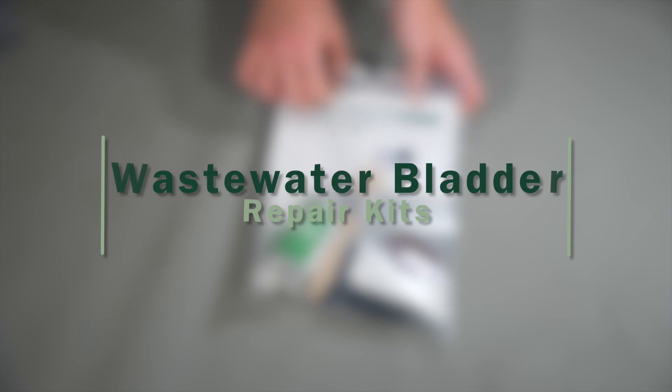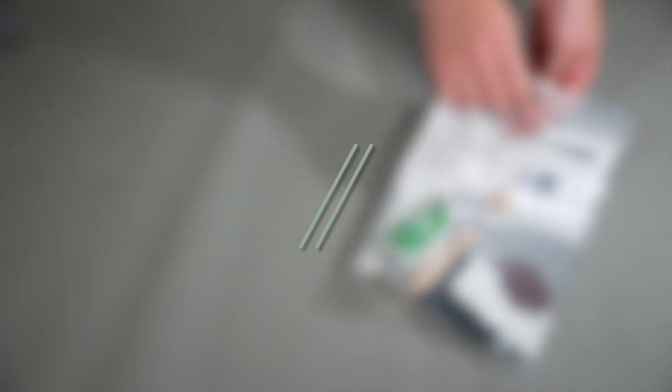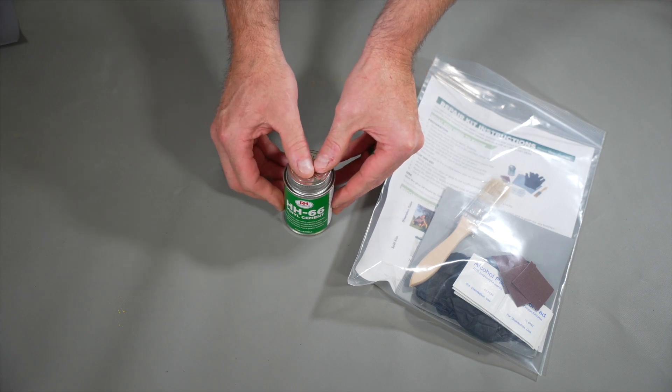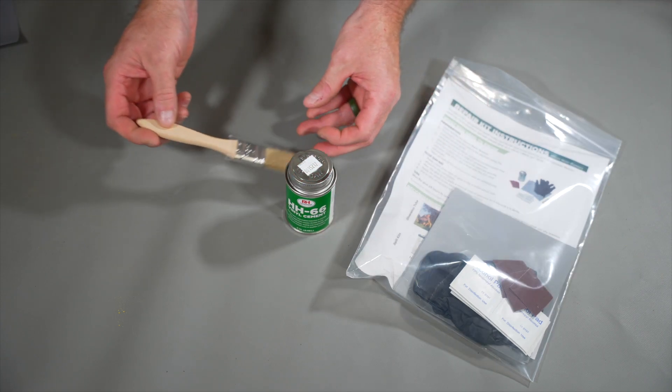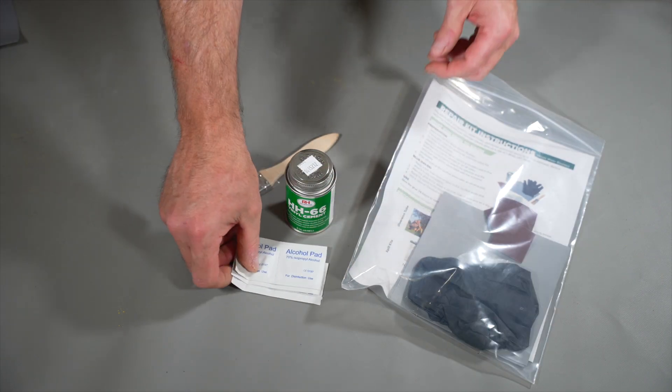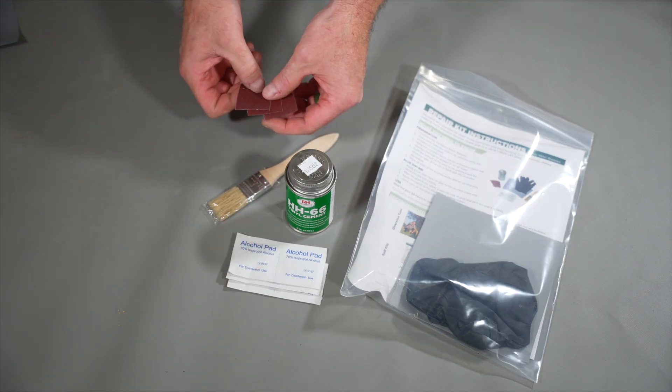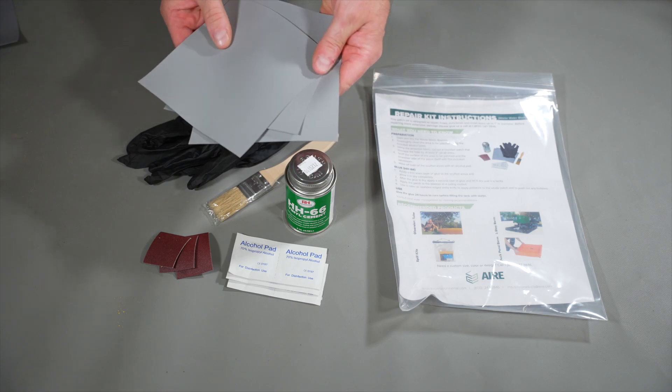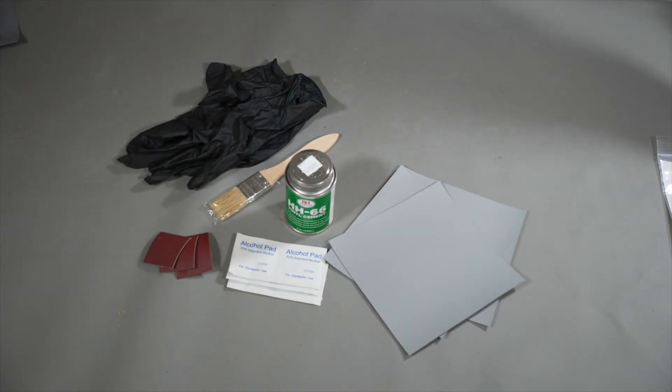Air Environmental wastewater bladder repair kits include the following: 1 4-ounce canister of HH66 vinyl cement, 1 1-inch glue brush, 6 alcohol prep pads, 3 pieces of 180-grit sandpaper, 1 pair of nitrile gloves, and 3 pieces of 6-inch by 6-inch 22-ounce PVC fabric.